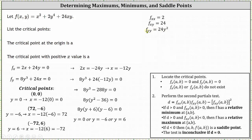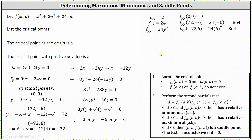At the point (0, 0), the second order partial with respect to y is equal to zero. At the point (72, -6), the second order partial with respect to y is equal to 864, and we get the same result at the point (-72, 6). Now we're ready to find the value of d to determine whether we have a relative min, relative max, saddle point, or the test is inconclusive at each of the three critical points.